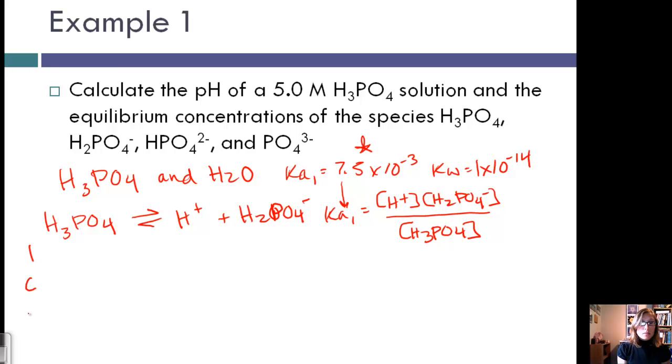So now let's set up an ICE table. Initially it says we have 5 molar. We have no H+ and no H2PO4 because this is not a strong acid. So our change is minus X, plus X, plus X. For equilibrium, we get 5 minus X, X, and X. Substituting those values into our Ka, our H+ is X, our H2PO4 is X, and our H3PO4 is 5 minus X.